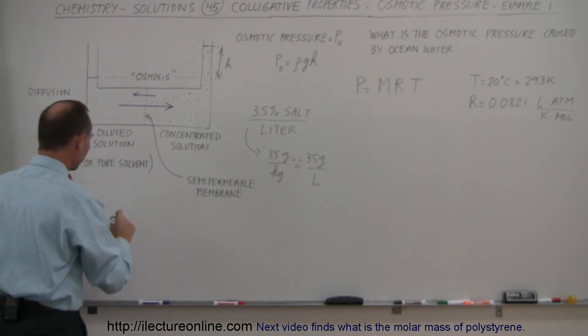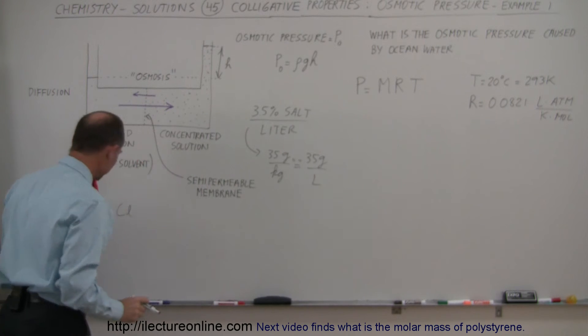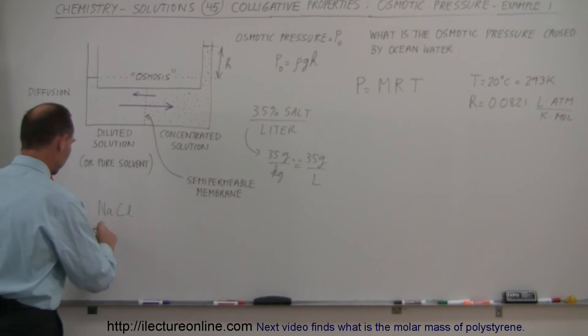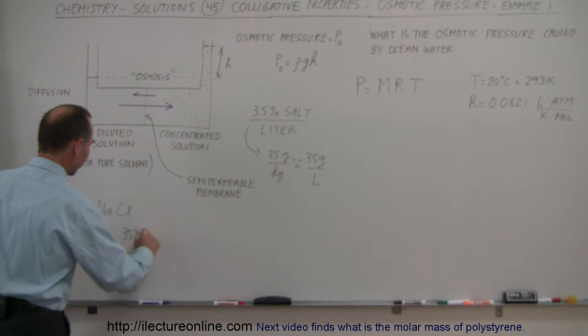All right, so notice that with sodium chloride, we need to find the molar mass of sodium and the molar mass of chloride. Now, for sodium, the molar mass is 23 grams per mole. And for chlorine, it is 35.45 grams per mole.